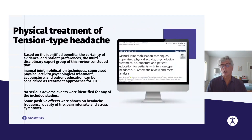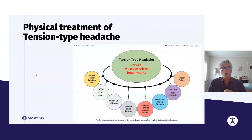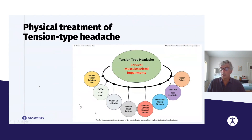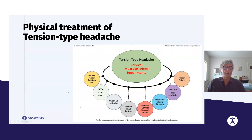A recent article by Fernandes Les Peñas outlines physical treatment options for tension-type headache. First, cervical musculoskeletal impairments must be assessed before setting up a treatment plan. Within the cervical assessment, we evaluate whether the flexion rotation test is positive, whether there is reduced cervical range of motion, whether there is a change in muscle strength, and whether trigger points are present.